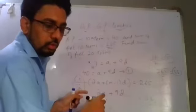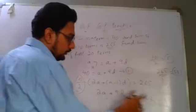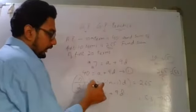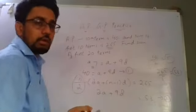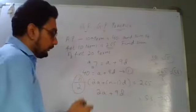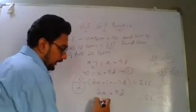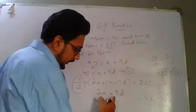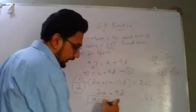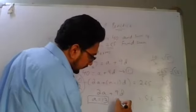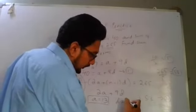So this becomes 53. This becomes 2A plus 9D. Equating the two. Now this becomes 2A plus 9D. We can equate it directly. We can either use elimination or substitution. Both will work. So we are getting our final value, A is coming 13.